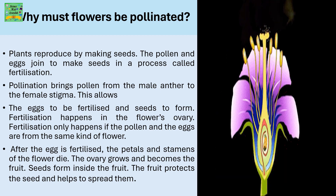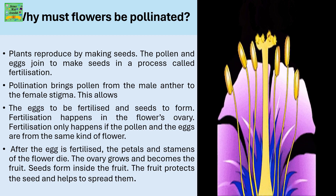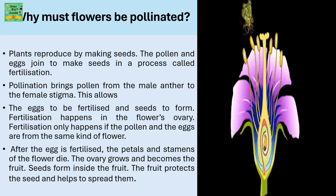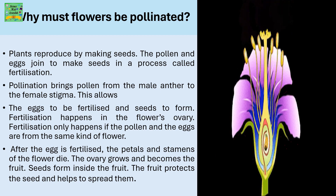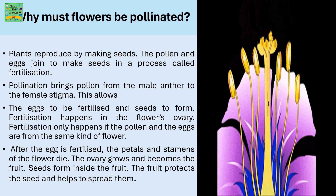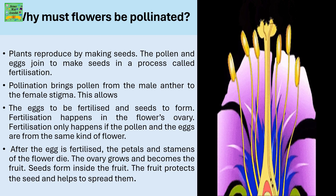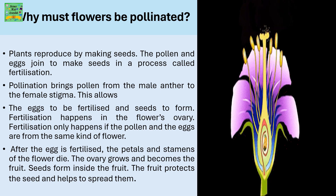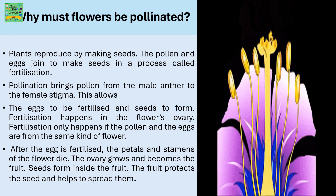Fertilization happens in the flower's ovary, and only happens if the pollen and the eggs are from the same kind of flower. After the egg is fertilized, the petals and stamens of the flower die. The ovary grows and becomes the fruit. Seeds form inside the fruit, and the fruit protects the seeds and helps to spread them.